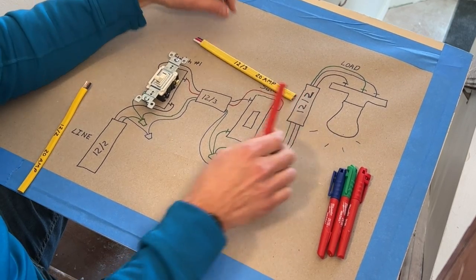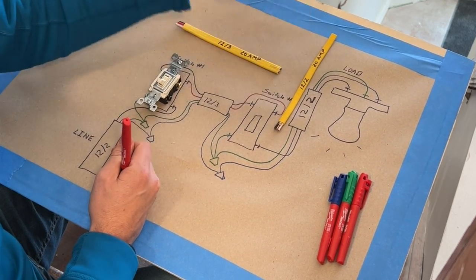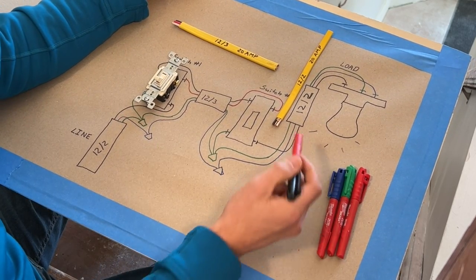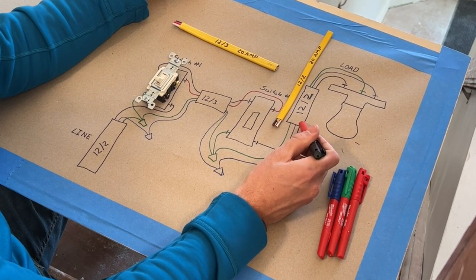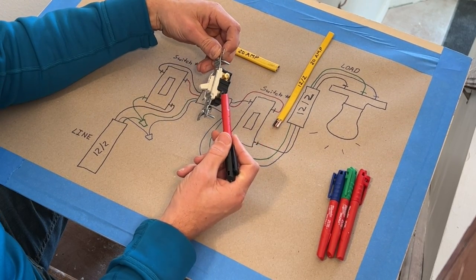And then from the last set of wiring, we would have 12-2. That would be our load, and that's going to our light fixture. So you would have the hot that's going to provide hot to the light going into your common.